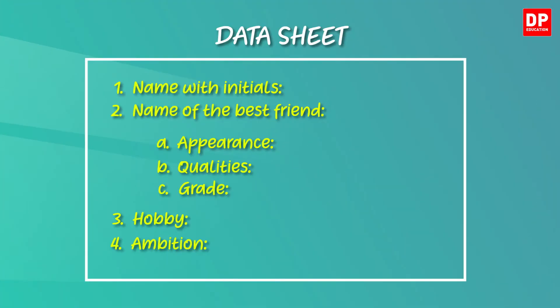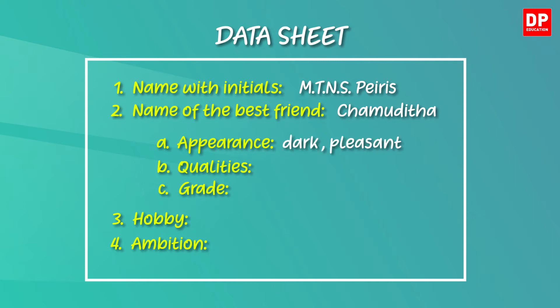You listened to the dialogue between Shakti and the examiner. Let's check your answers now. Did you hear Shakti's name with initials? It is MTNS Peeris. What's the name of his best friend? He is Chamudita. What about his appearance? He is dark and pleasant. Now the qualities — he is kind and helpful. What is his grade? Shakti says he is also in grade 10. What does he like to do during his free time? He likes reading. And his ambition? He wants to be a journalist.